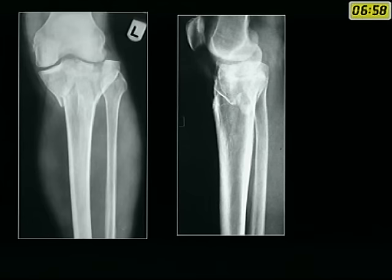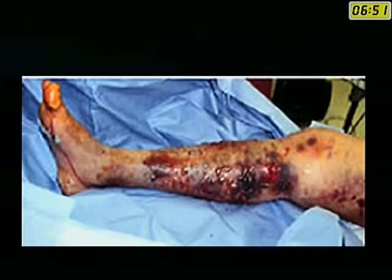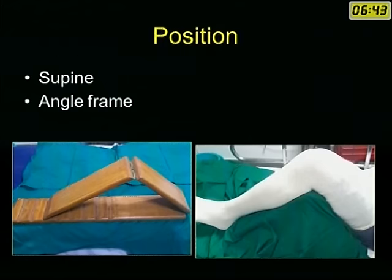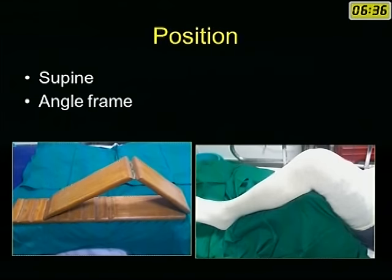What I want to stress here is: first look at the soft tissues, not the X-ray. If the soft tissue condition is poor, you definitely cannot go in for open reduction. The commonly used position is knee in flexion. We use a device called an angle frame — a simple wooden device that allows multiple varying degrees of knee flexion, also used for tibia nailings.